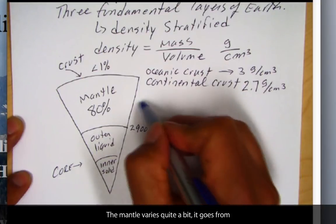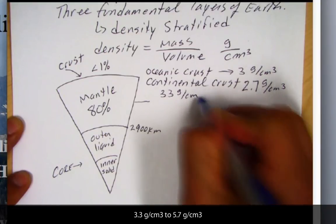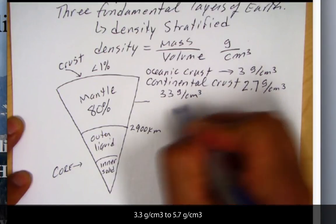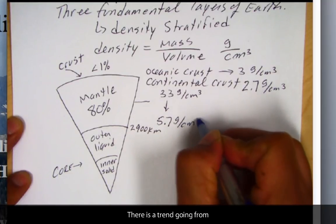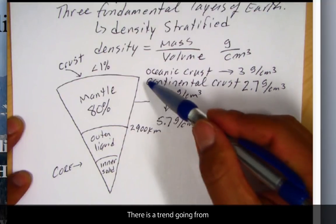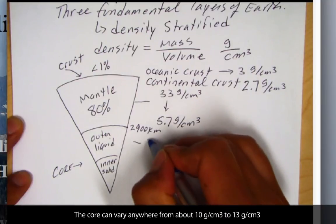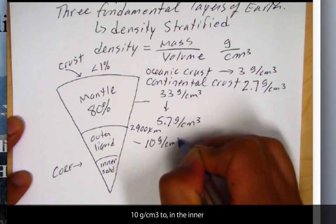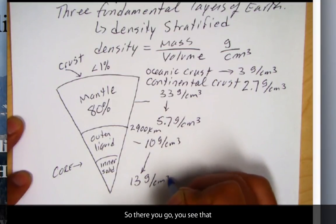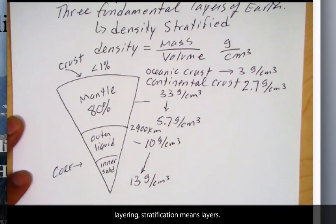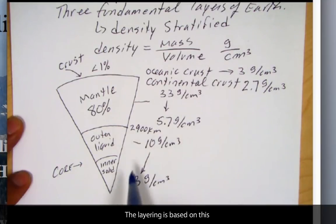And then the mantle varies quite a bit. It goes from about 3.3 grams per centimeter cubed to about 5.7 as you go deeper down. And the core can vary anywhere from about 10 grams per centimeter cubed to, in the inner core, 13 grams per centimeter cubed. You see that layering. Stratification means layers here. So, the layering is based on density.